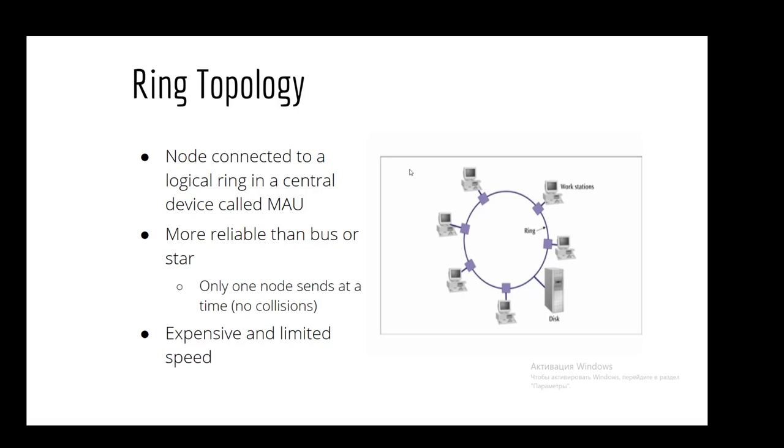Ring topology. This is connected to logical ring in a central device called MAU. Secondly, it's more reliable than bus or star. Also, only one node sends at a time, it means that there are no collisions. Moreover, it's expensive and has limited speed.